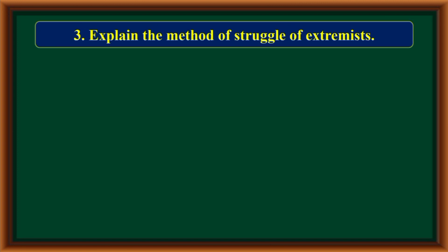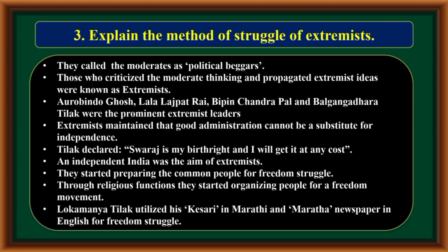Explain the method of struggle of extremists. They called the moderates as political beggars. Those who criticized the moderate thinking and propagated extremist ideas were known as extremists. Arvindo Ghosh, Lala Lajpat Rai, Vipin Chandrapal, and Bal Gangadhar Tilak were the prominent extremist leaders. Extremists maintained that good administration cannot be a substitute for independence. Tilak declared, 'Swaraj is my birthright and I will get it at any cost.' An independent India was the aim of extremists. They utilized religious functions to organize people for a freedom movement. Lokmanya Tilak used his Kesari and Marathi newspapers for the freedom struggle.